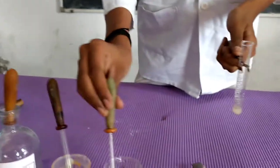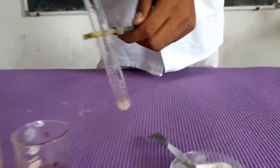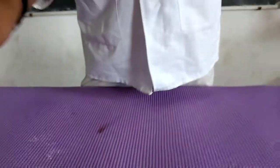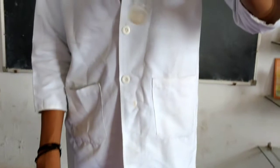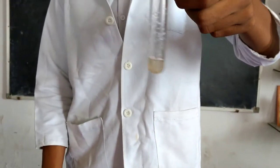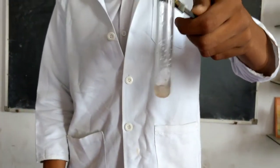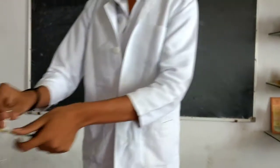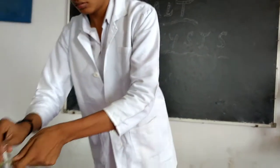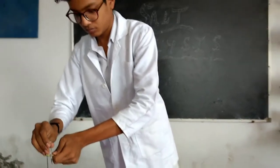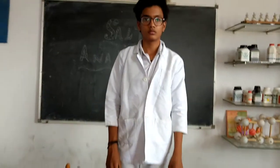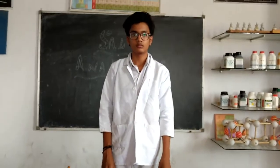In the second test tube, he is adding KMnO₄ solution, whose colour is discharged. So these are the two conformity tests of nitrite ions.